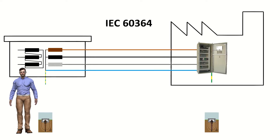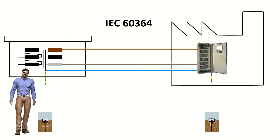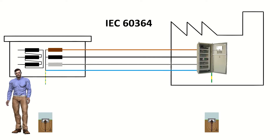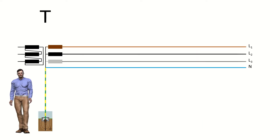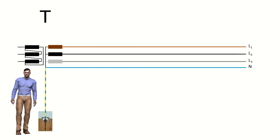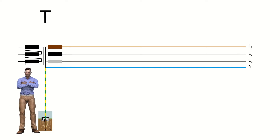We can name the different distribution schemes using a multi-letter system. The first letter is associated with the type of earth connection of the network, normally in the transformer of the transformation center, although it can also be complemented in other points. The second letter is associated with the type of connection of the masses of the loads such as electrical machines. For the first letter, we use the letter T if there is a direct connection to earth in the transformation center, normally the neutral tap of the transformer.